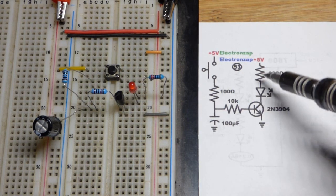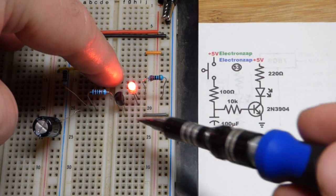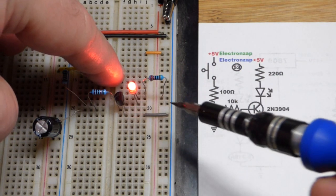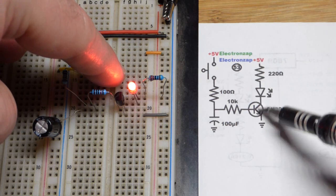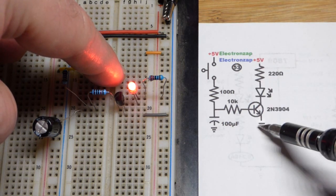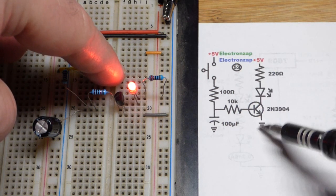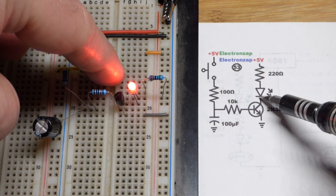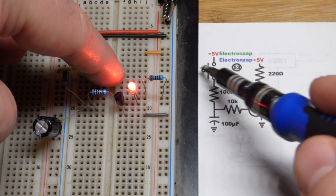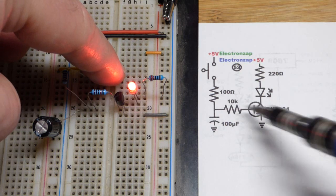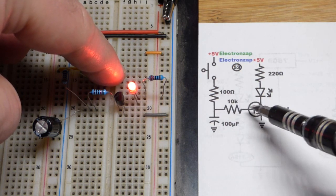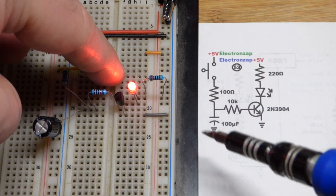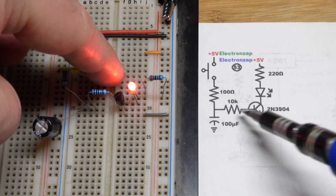So emitter, base, and collector. When I close this switch we turn the transistor on pretty quickly, almost close to instantly. But in any case now transistor is pretty much on fully and the 220 ohm resistor is limiting current through the LED. So we got this current path going through the base. We also had to charge the capacitor which is why it probably took a slight period of time before it turned on.